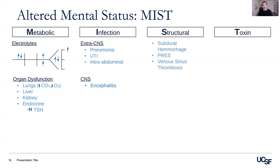Structural causes of altered mental status include subdural hemorrhages, PRES — also known as posterior reversible encephalopathy syndrome — and venous sinus thrombosis. You may be asking yourself why isn't stroke on this list. The reason is that it's relatively uncommon for a stroke to present with altered mental status alone. Certainly, if a patient presents altered with a localizing neurologic deficit like left arm weakness, stroke should come to the top of our differential. However, there are some strokes that can cause altered mental status alone, which we'll talk about later.